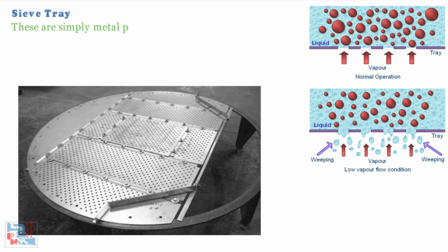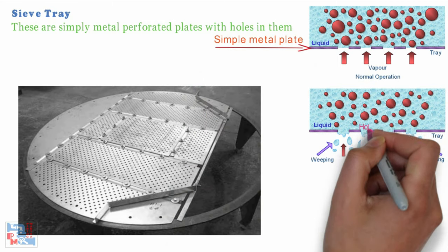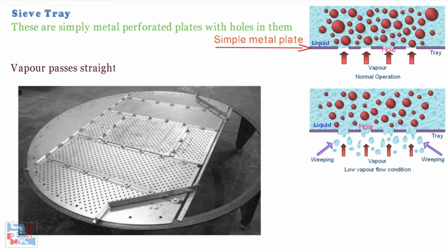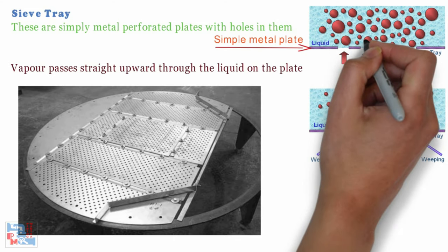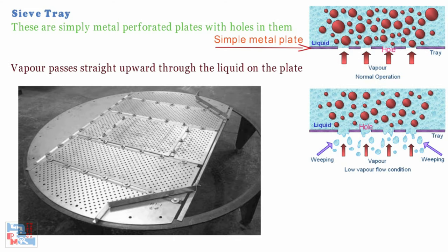Sieve trays are simply metal perforated plates with holes in them. Vapor passes straight upward through the liquid on the plate. The arrangement, number and size of the holes are design parameters.